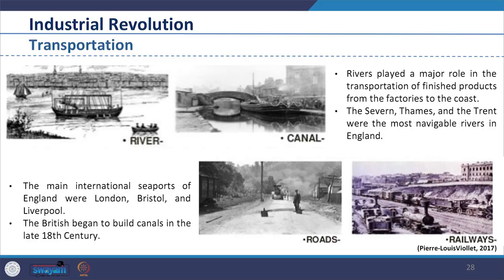The Severn, Thames and Trent were the most navigable rivers of England. The main international seaports of England were London, Bristol and Liverpool. The British began to build canals in the late 18th century. In 1720, roads gained importance for the Industrial Revolution. After road lines were built, turnpikes were established to charge a toll for maintenance. The railway line reduced the role of canals and any area with a railway line became available for goods transport.